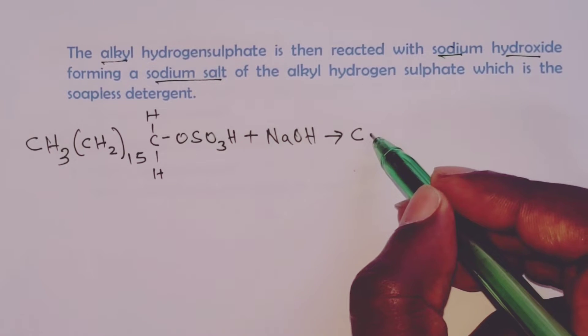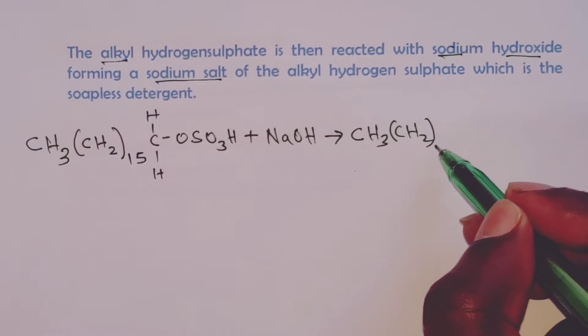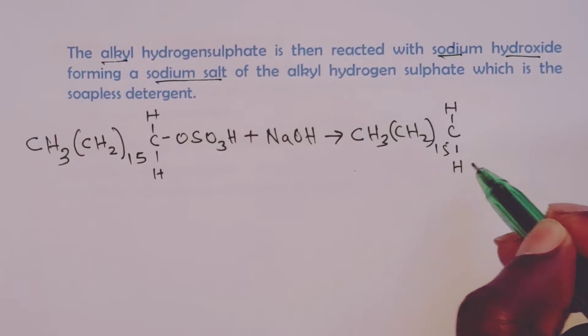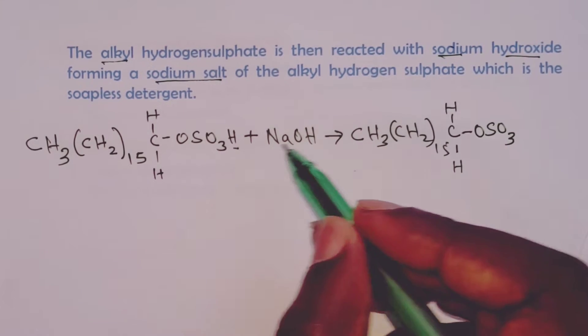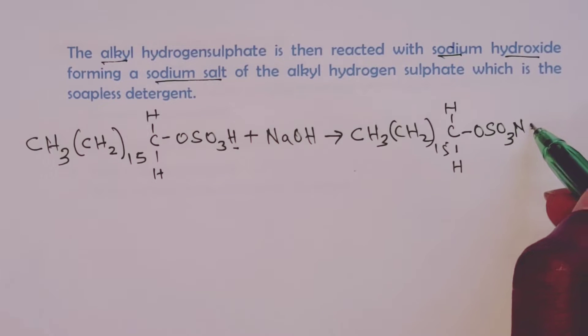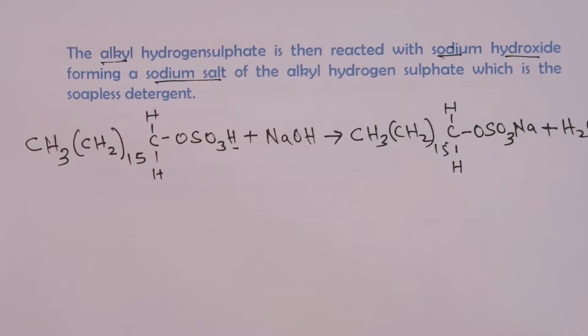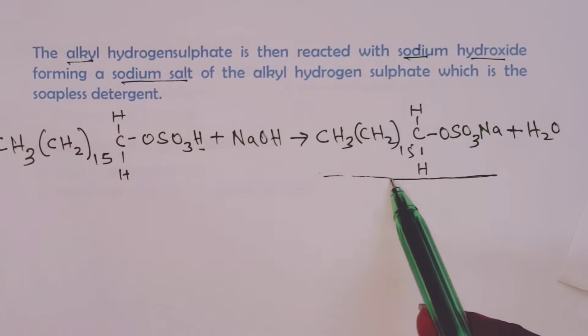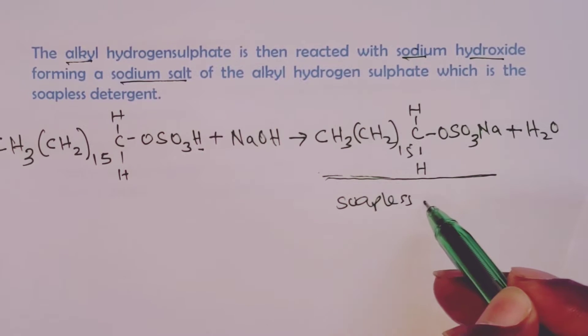So this is CH3, CH2 15 times, then we have the CH2 and then OSO3. The hydrogen here would be replaced with a sodium atom, and we have that being produced together with water molecule. So this compound formed here, this sodium salt that is formed here, now becomes our soapless detergent.